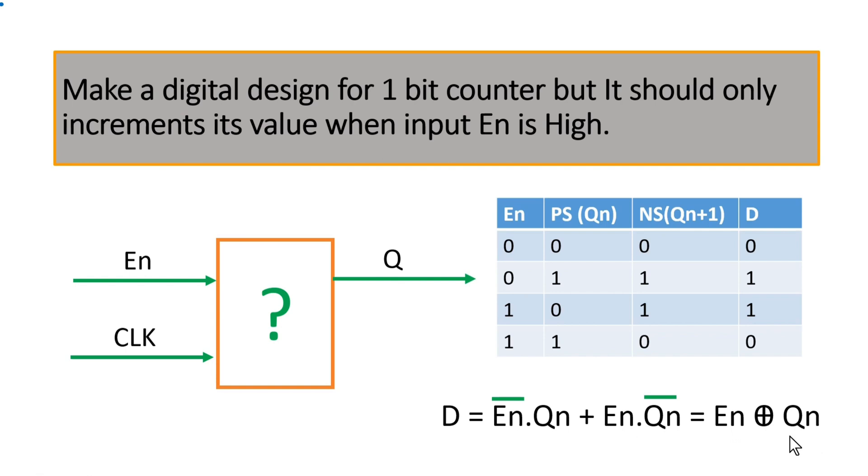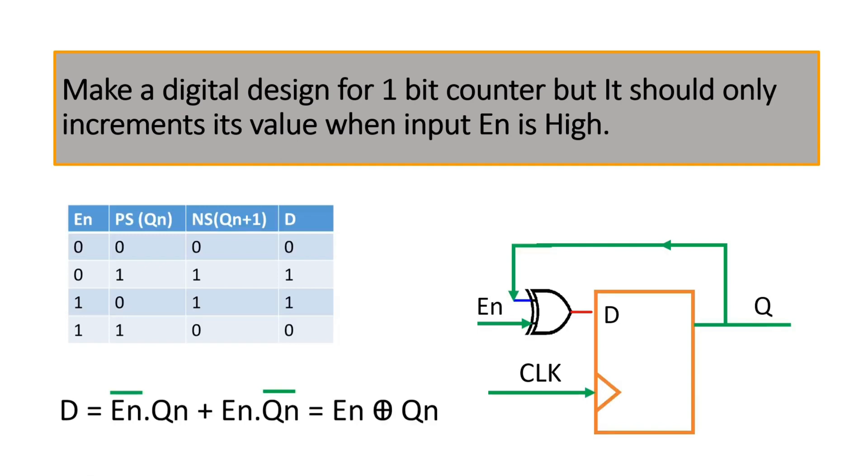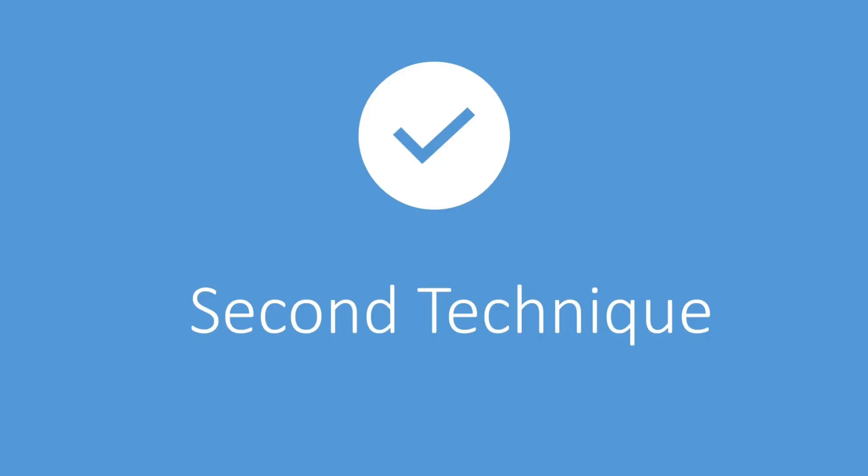Now from here you can easily see the final logic circuit diagram. As we already discussed, because it is a 1-bit counter, so it will have only one D flip-flop. And now we need to know what will be the expression for this D. It is enable XOR Qn. So this is enable signal which is coming from outside, and the other input of this XOR gate is Qn. So this way, this will be our final logic circuit diagram.